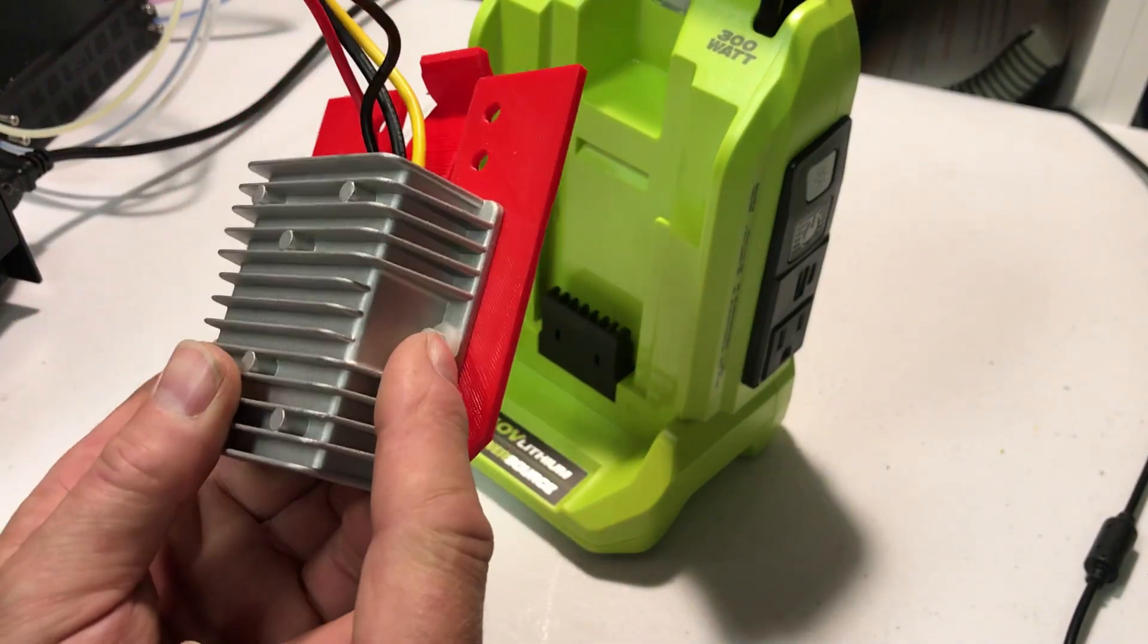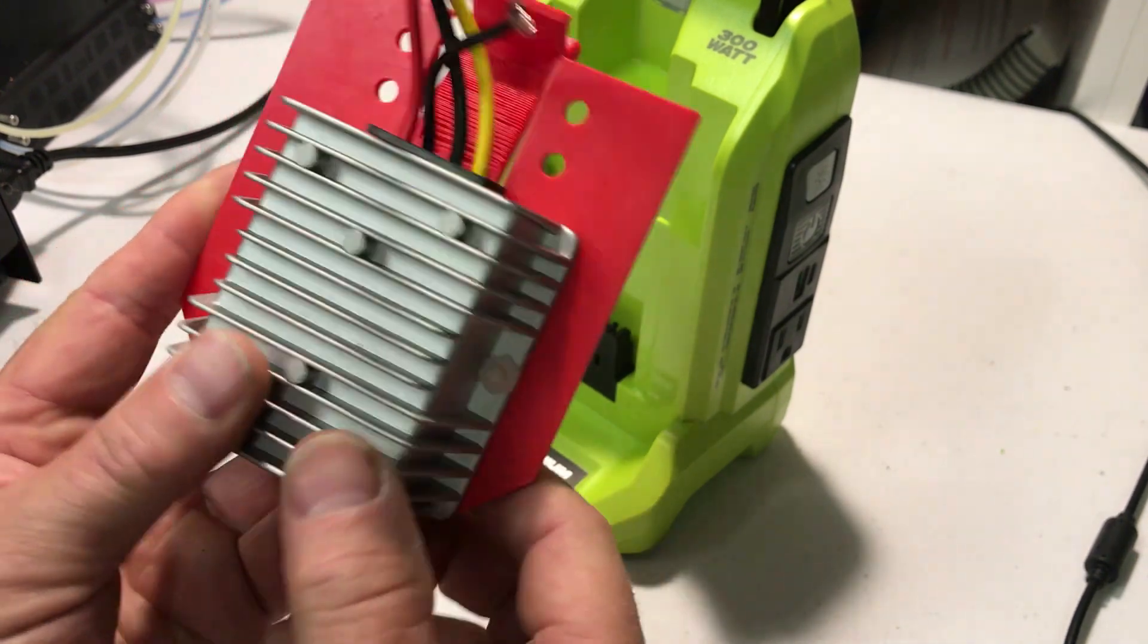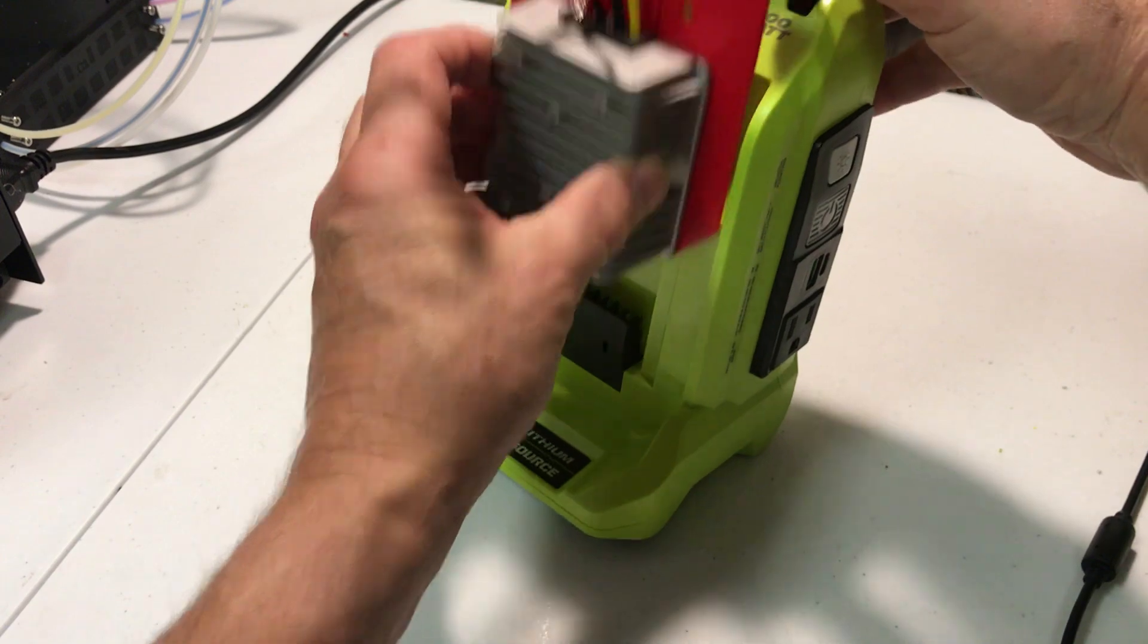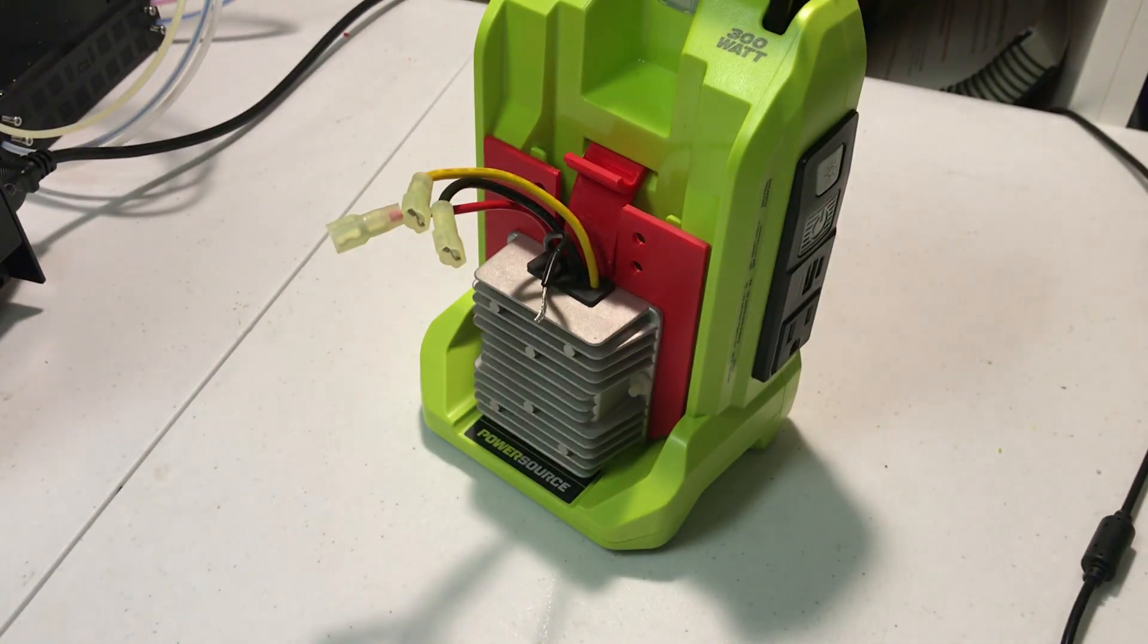So I have two nylon bolts now that have attached the DC to DC converter to the plate and now the plate should be able to just move right in and snap into place.